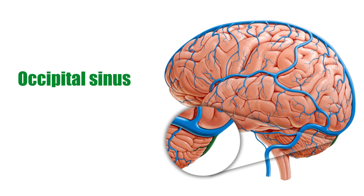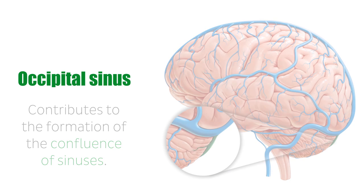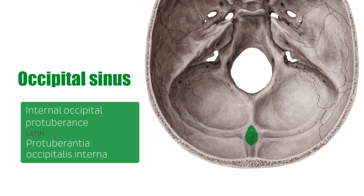It travels within the base of the falx cerebri and is located on the inner surface of the occipital bone, as the name suggests. This sinus extends from the foramen magnum to the confluence of sinuses. The occipital sinus, along with the superior sagittal sinus, the transverse sinuses, and the straight sinus, contributes to the formation of the confluence of sinuses, which is found at the level of the internal occipital protuberance.